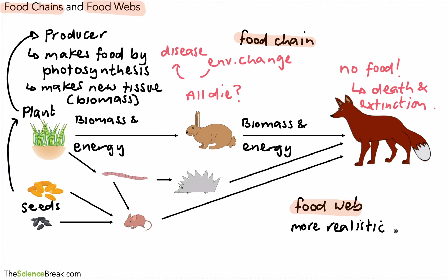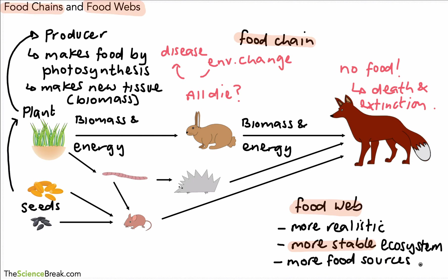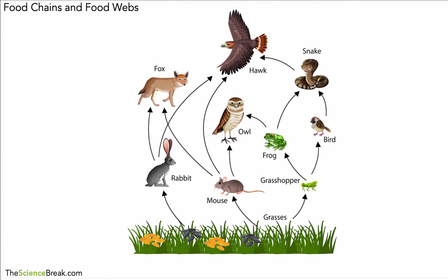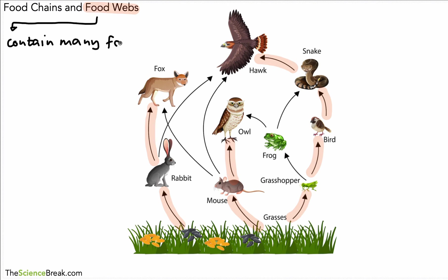This is better because there is more stability in the ecosystem. The reason it's more stable is because each type of living thing has more than one food source, and this is better for the survival of the species in that ecosystem. Here we have a slightly more complex food web, and we can see that there are a variety of food chains within it — for example, one with mice and the owl, and another with grass, grasshopper, bird, snake, and hawk for a slightly longer food chain. Food webs contain many food chains.